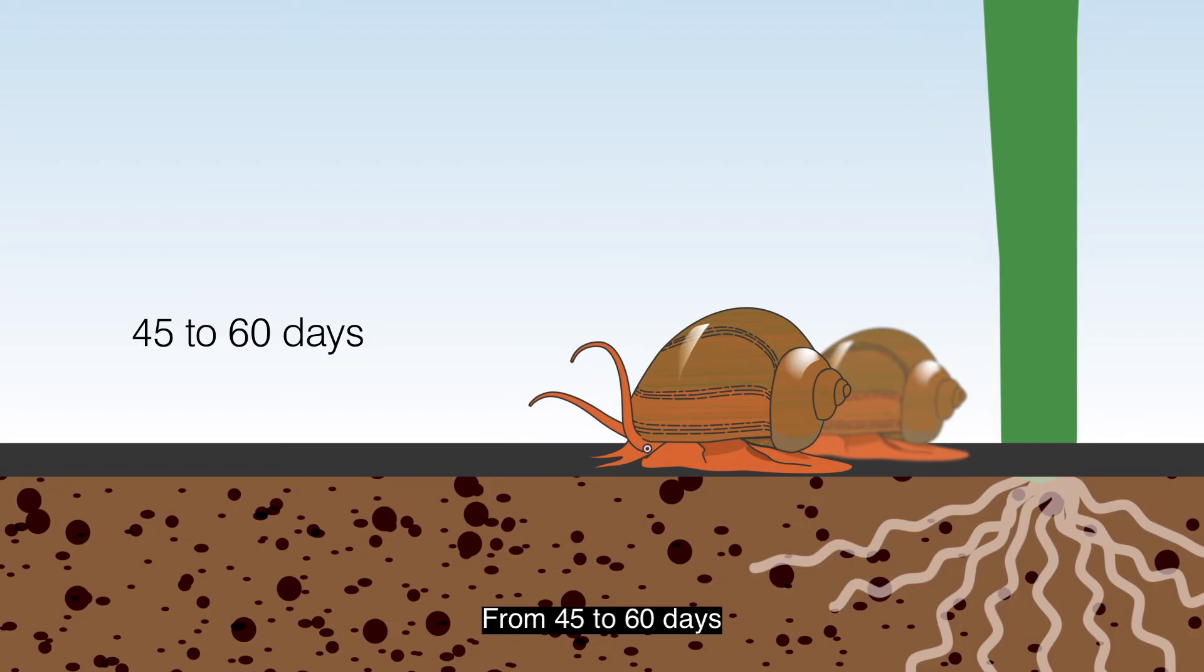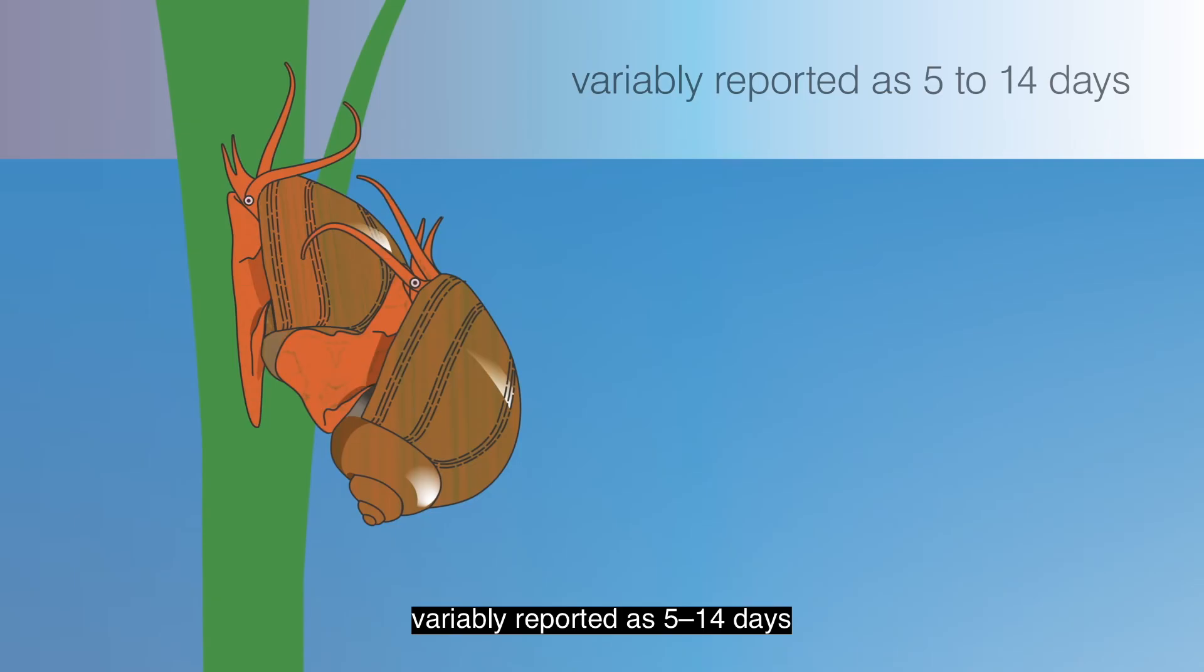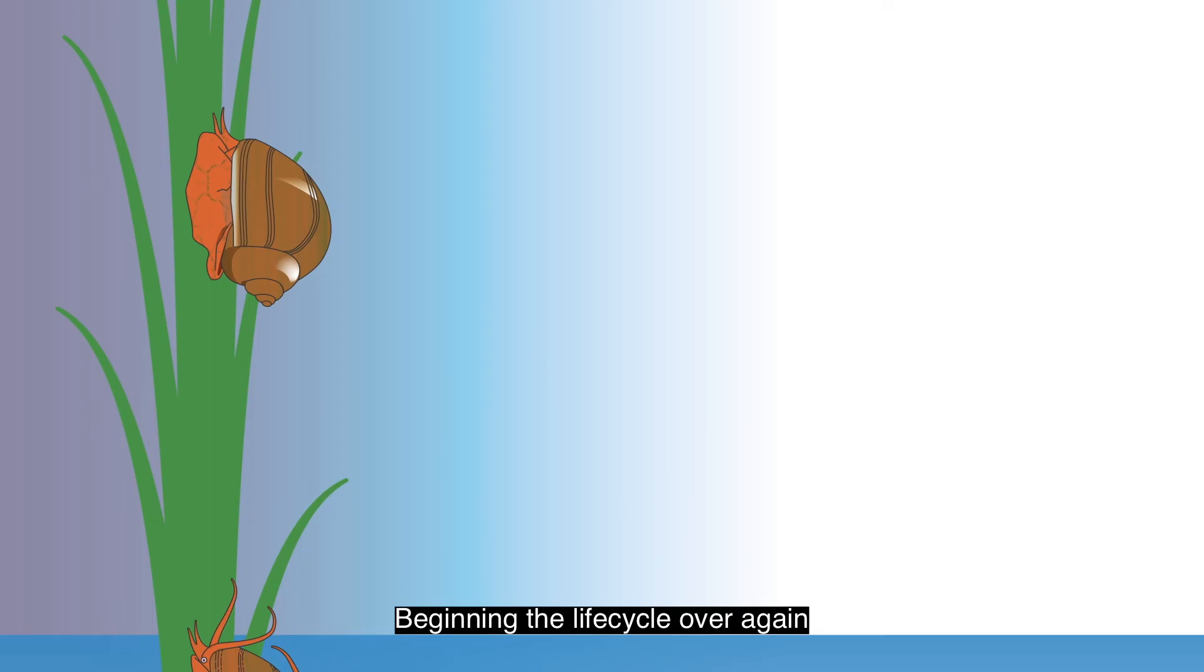From 45 to 60 days, when the snails reach around 2.5 centimeters in diameter, they become fully grown adults and are able to reproduce, with the interval between successive egg-laying variably reported as 5 to 14 days, beginning the life cycle over again.